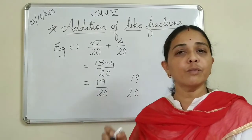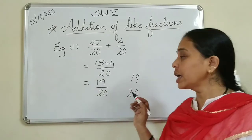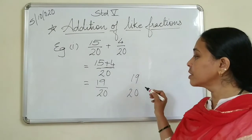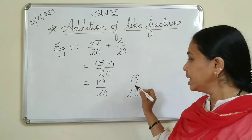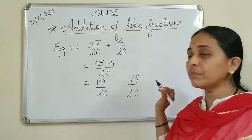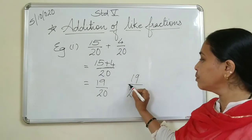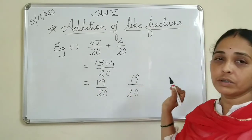Many of you in homework have written it incorrectly. This is not nineteen and twenty - it is nineteen upon twenty. You must put the fraction bar. Write fractions correctly.